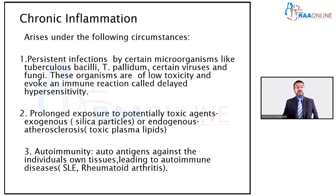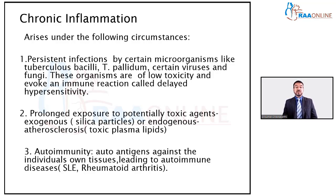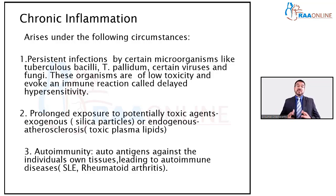A patient may also be exposed to certain exogenous or endogenous substances. Exogenously, the best example is silica particles — persons working in mines, sandblasting, or glass-making industries are exposed to silica, a chemical constituent of sand, which can produce chronic inflammation inside the body. Endogenously, in atherosclerosis, lipids accumulate in the blood and beneath the blood vessel wall between the intima and media, thickening the vessel and producing an inflammatory reaction.